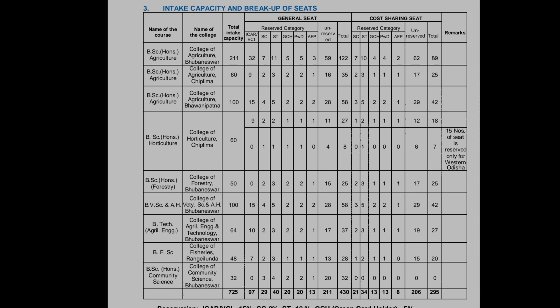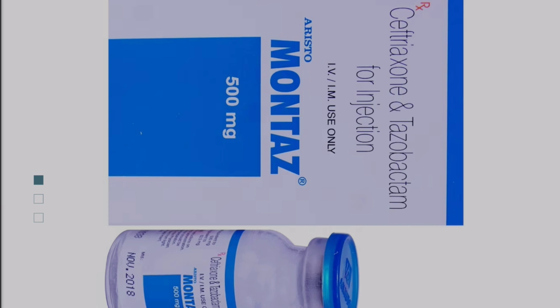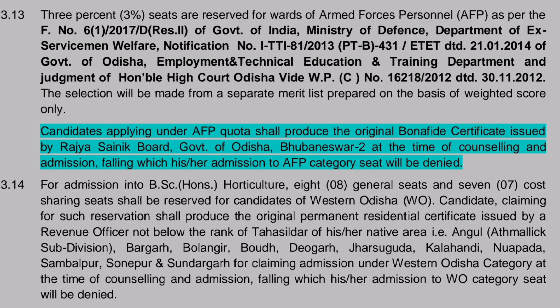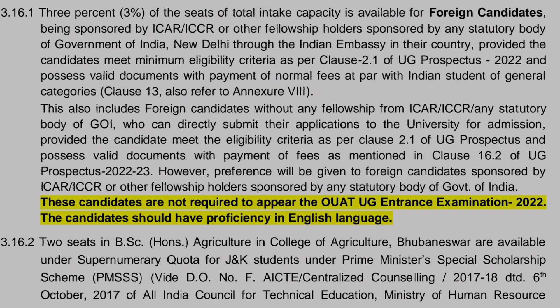The reservation breakdown is: VCI 15%, SC 8%, ST 12%, GCH 5%, PWD 5%, AFP 3%. If you want to apply under the Green Card holder category or PWD, you must submit a certificate from the competent authority. Candidates applying under AFP quota must produce an original bona fide certificate issued by Rajya Sainik Board, Government of Odisha, at the time of counselling and admission — failing which, admission under AFP category will be denied. Also, 3% of total seats are available for foreign candidates sponsored by ICAR, ICCR, or other fellowship holders sponsored by any statutory body of the Government of India, through the Indian Embassy in their country.